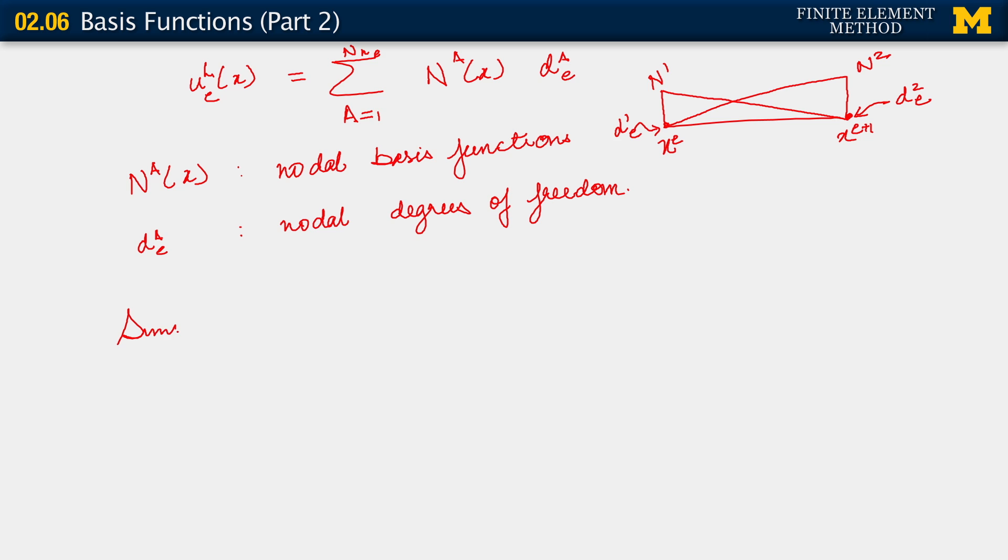So we've got this far with talking about how we are going to write out this expansion of our finite dimensional trial solution over a single element. We do the same thing also for the weighting function. So similarly for w_h function of position, also restricted to element e.